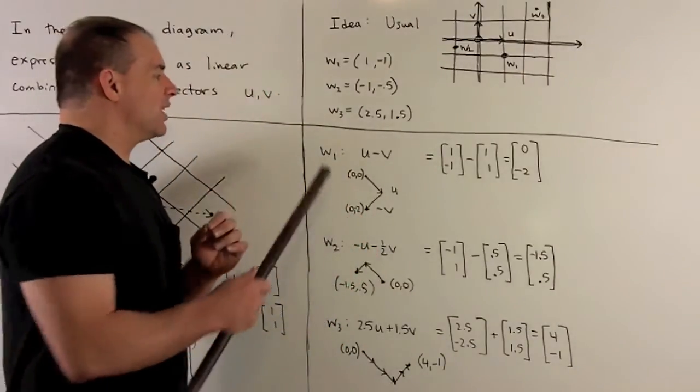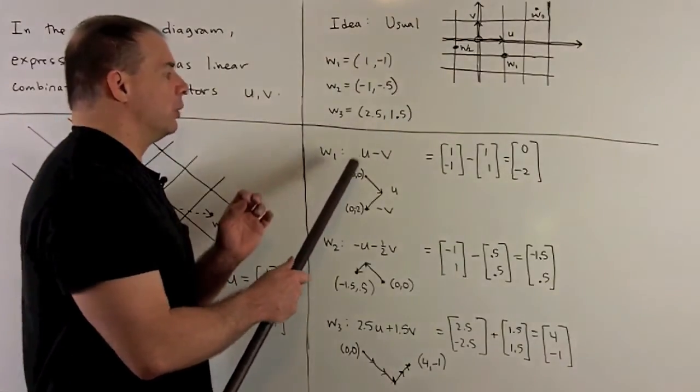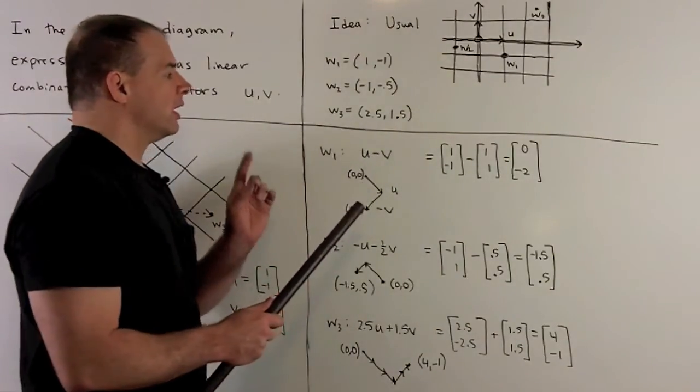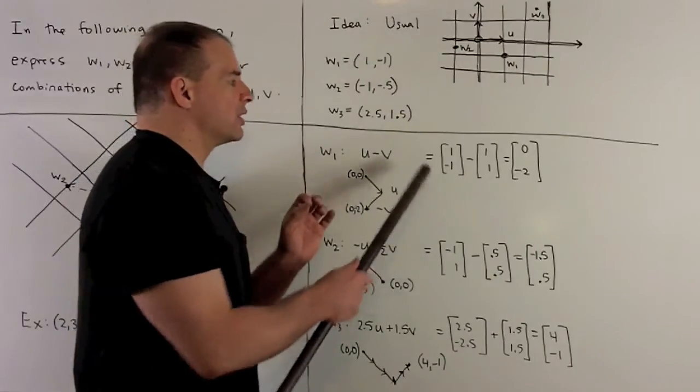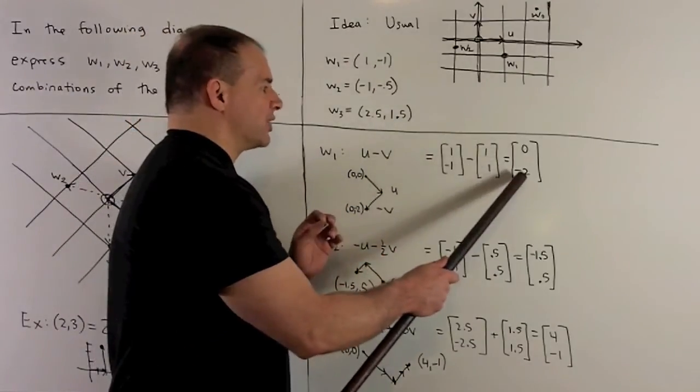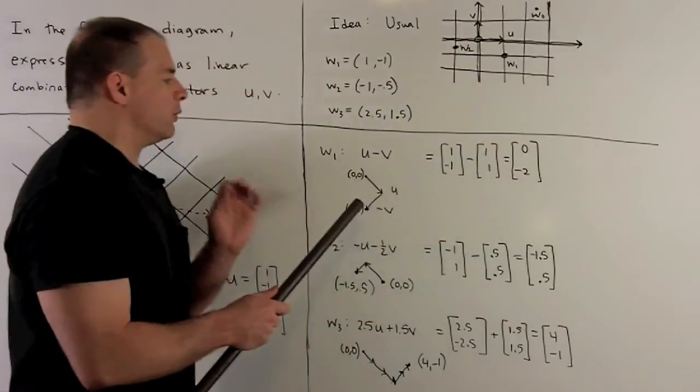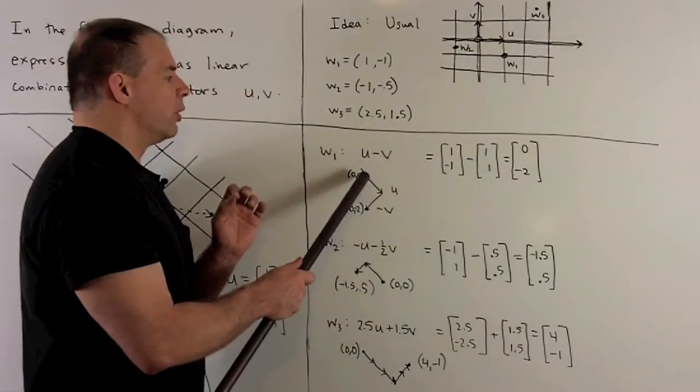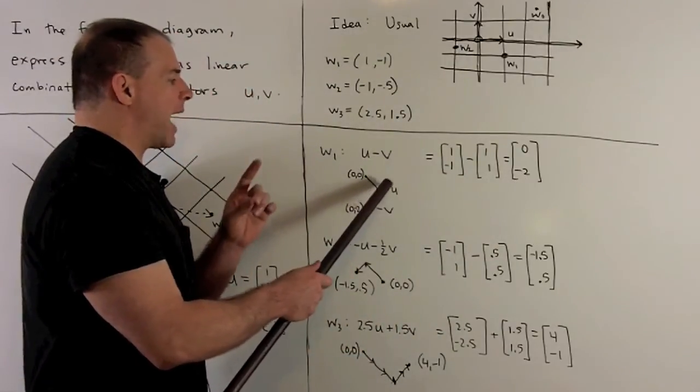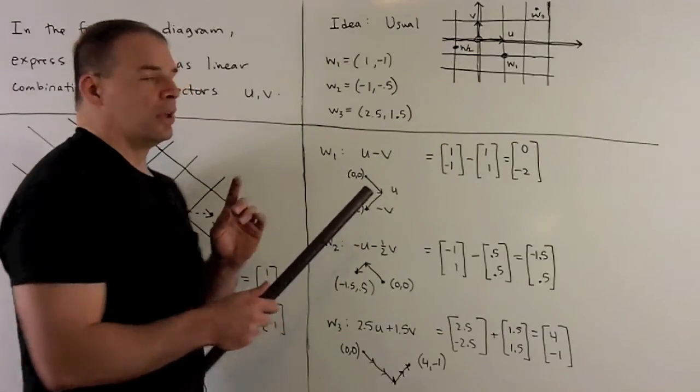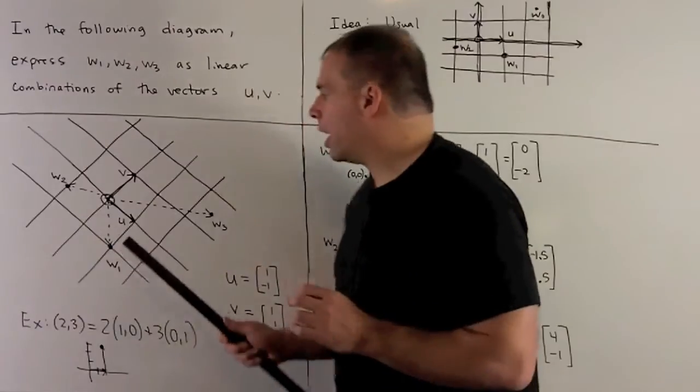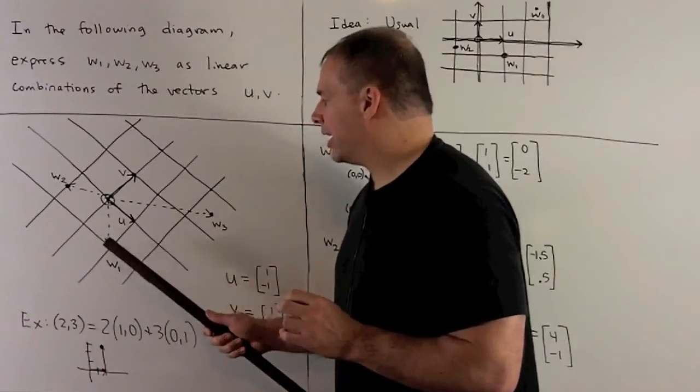Now, that means w1 is going to be equal to u minus v. If we stick in for u and v in terms of x and y coordinates, we're going to get out (0, -2). So if we do the vector addition here, we'll go over 1 in u and then back 1 in v and we wind up at (0, -2). So if you note, our w1 is directly beneath the origin as expected.